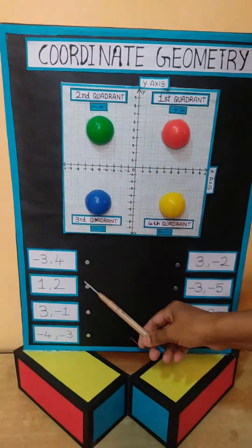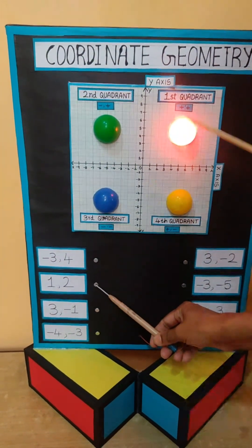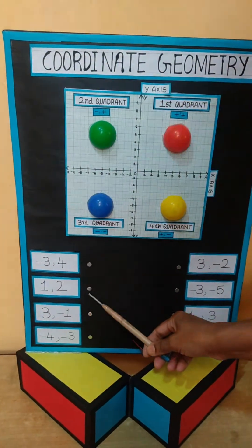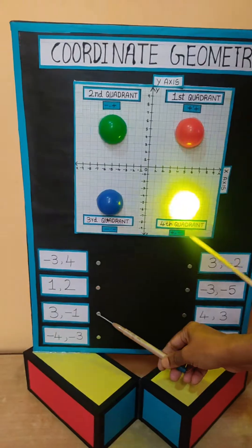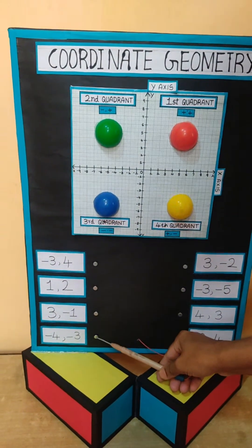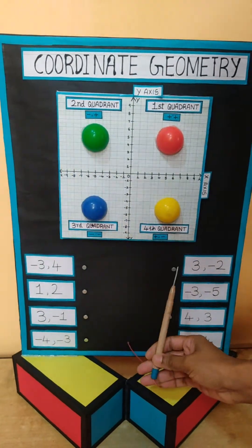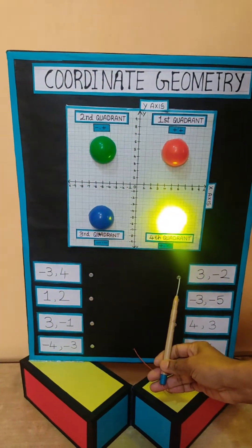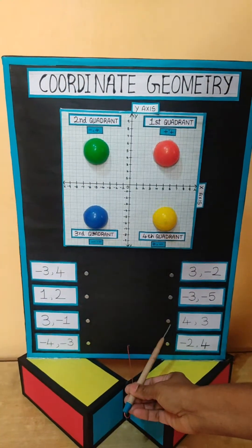You can see the first one, which is minus three and four, so the second quadrant light is glowing here. Similarly, one and two where both are positive—x and y are positive. Here is plus and minus one, the fourth quadrant, and this is the third quadrant here.